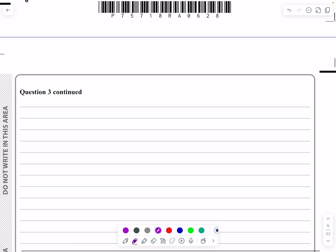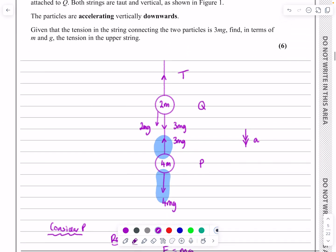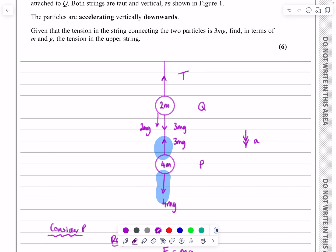If I now consider Q, it's going to be the same acceleration, and I'll be able to work out tension because that will be missing. So again, if I resolve vertically and I do F equals MA, let's just go and look at Q now.